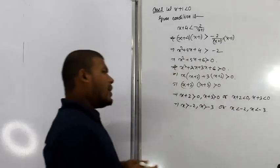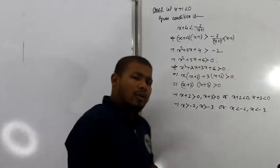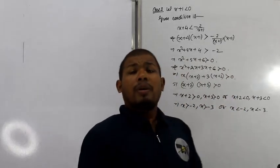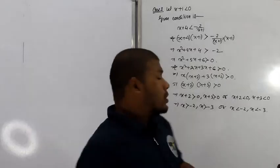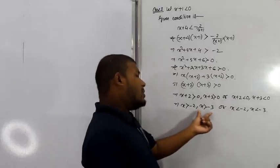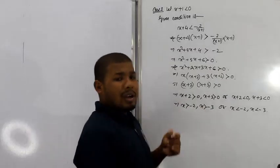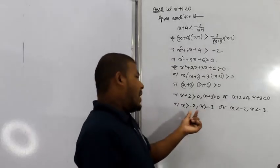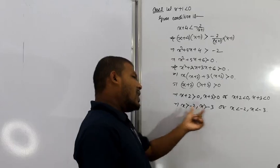Keep in mind the condition from Case 2 is x plus 1 less than 0, meaning x is less than minus 1. So we combine: x greater than minus 2 does not satisfy x less than minus 1 — wait, actually x greater than minus 2 combined with x less than minus 1 gives minus 2 less than x less than minus 1. And x less than minus 3 combined with x less than minus 1 gives x less than minus 3.